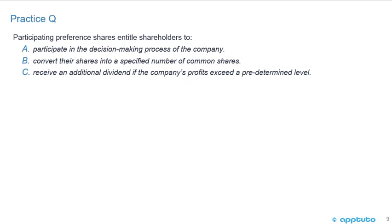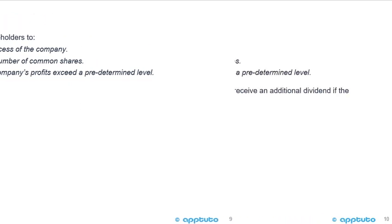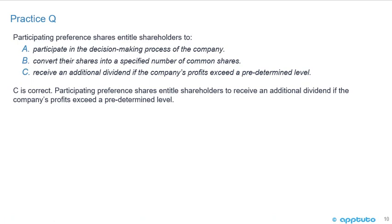One last practice question to finish this LOS. Participating preference shares entitle shareholders to: A, participate in the decision-making process of the company; B, convert their shares into a specified number of common shares; or C, receive an additional dividend if the company's profits exceed a predetermined level. The answer is C — participating preferred shares entitle shareholders to receive an additional dividend if the company's profits exceed a predetermined level. Option A is wrong — it's not about voting. Option B describes a convertible preference share, not a participating preference share. Be careful not to confuse those two. And that's the last slide for this LOS.